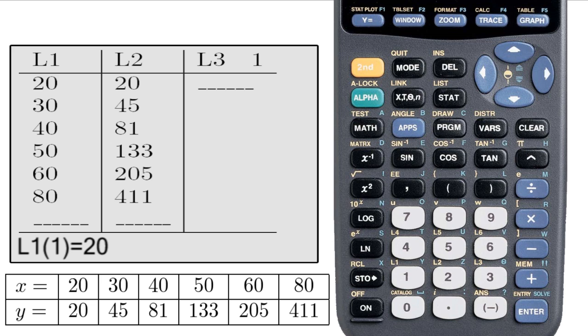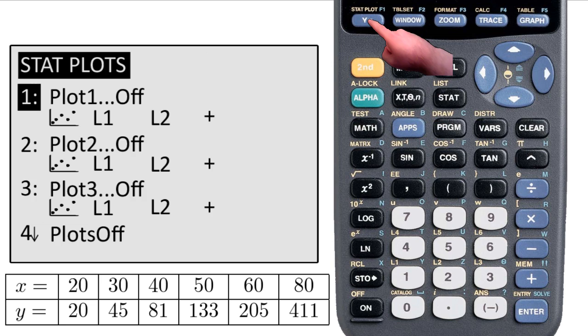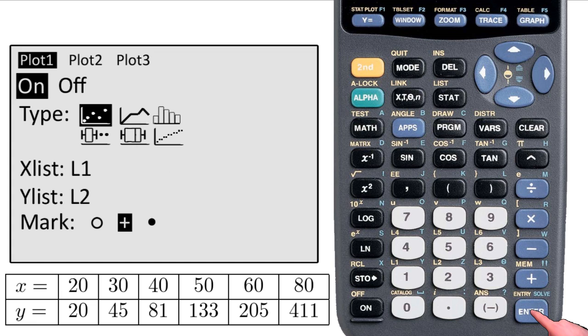Now let's take a look at these points on the graph. Hit Second, y equals, to get to Stat Plot. You see three plots available. Let's go to Plot 1. So I have a non-connected graph here, that's this here, and I have my x values listed as List 1 and my y values listed as List 2.